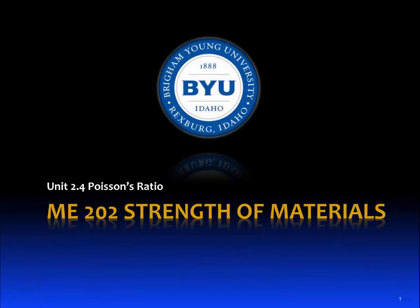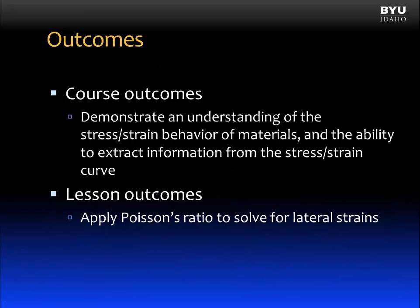Unit 2.4 Poisson's Ratio. The course outcome we've been focused on in this unit is to demonstrate an understanding of the stress-strain behavior of materials and the ability to extract information from the stress-strain curve. The lesson outcome is to apply Poisson's ratio to solve for lateral strains.